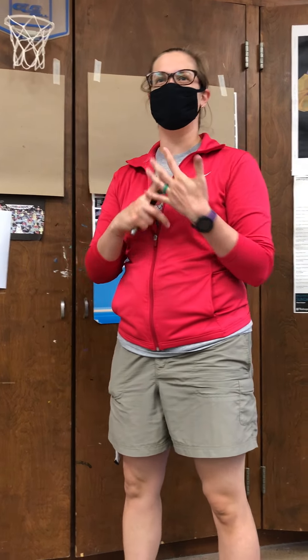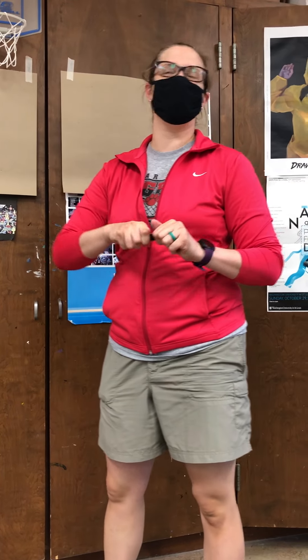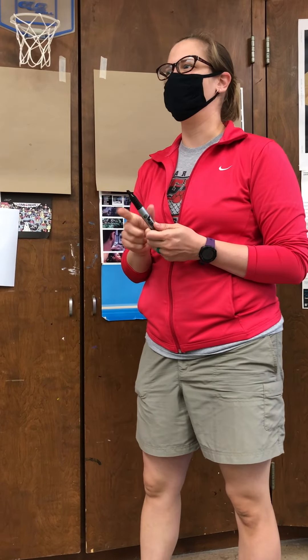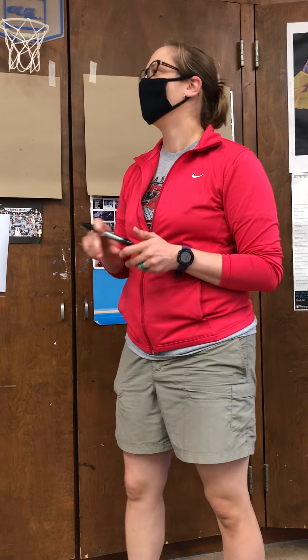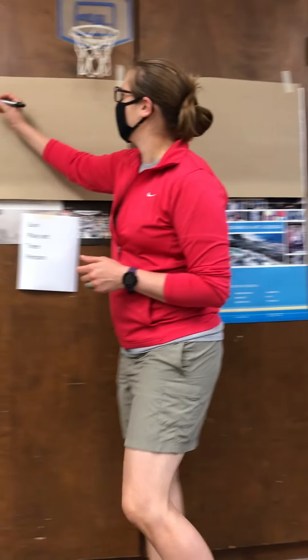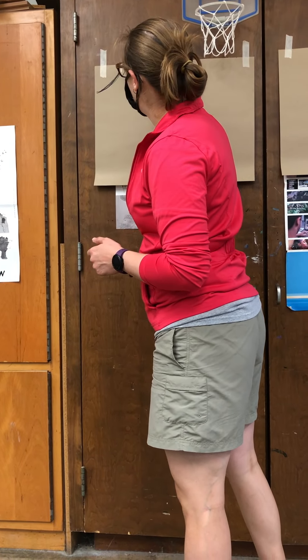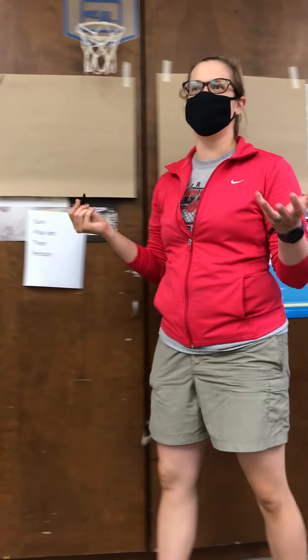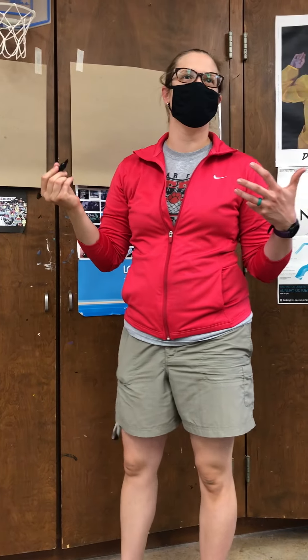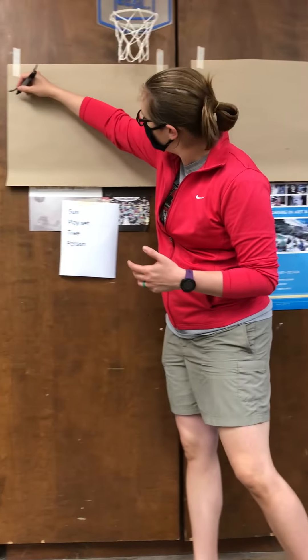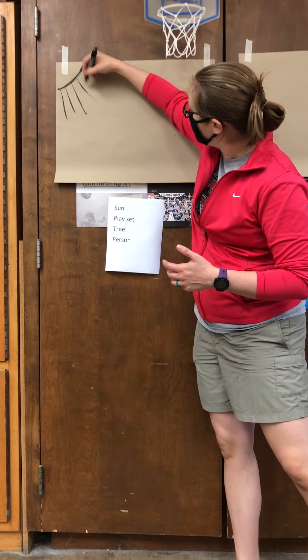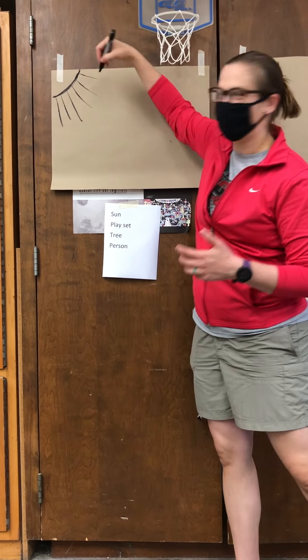I asked you guys to draw me four things: a sun, a playset, a tree, and a person. If you were a little kid, where is your sun automatically going to be? A corner. Does it matter what corner? Not necessarily, but it looks like this. And not a proper sun without that — the rays.